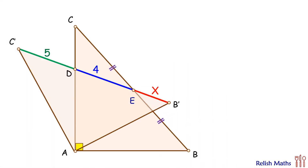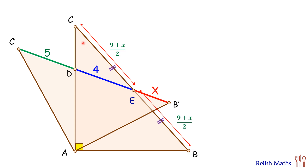The length C'B' is given as 9 plus x. Since the triangles are congruent, the length CB will also be 9 plus x. E is the midpoint, so the length CE will be (9 plus x) by 2, and EB will also be (9 plus x) by 2.